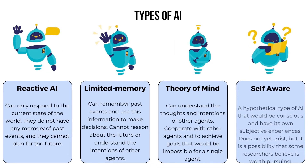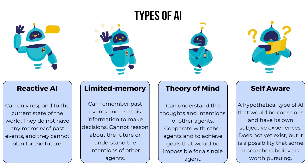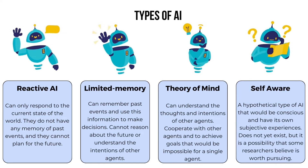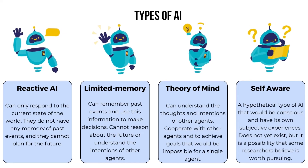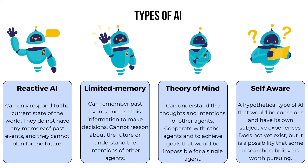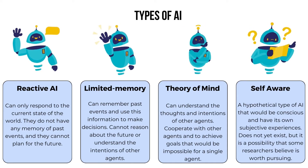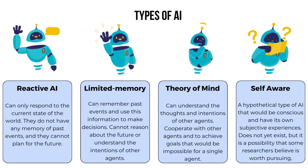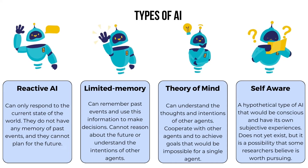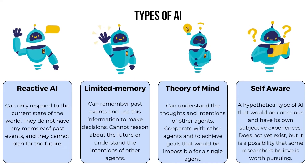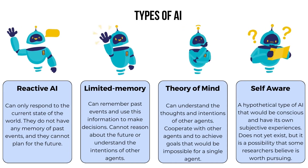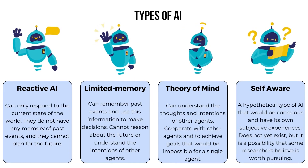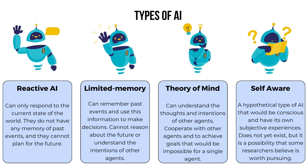The fourth type of AI is self-aware AI. Self-aware AI is a hypothetical type of AI that would be conscious and have its own subjective experiences.